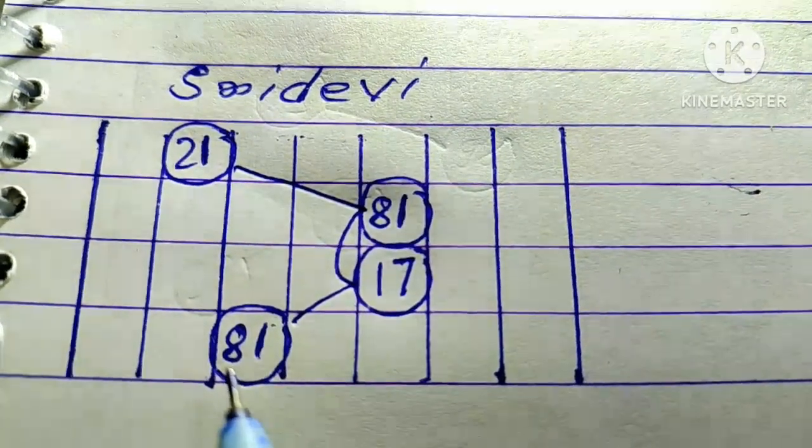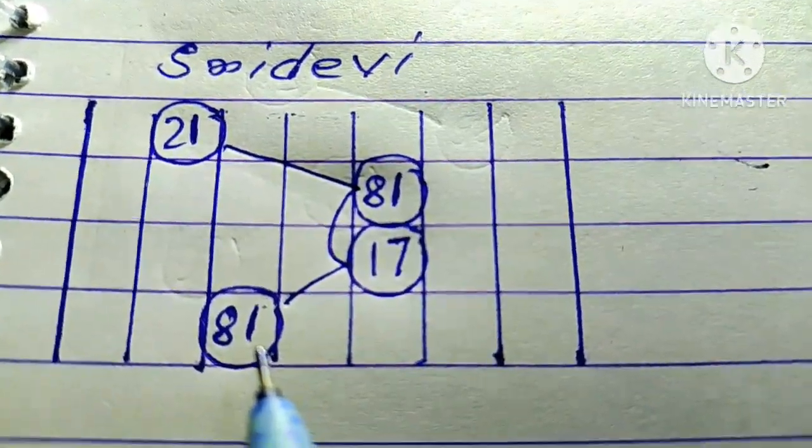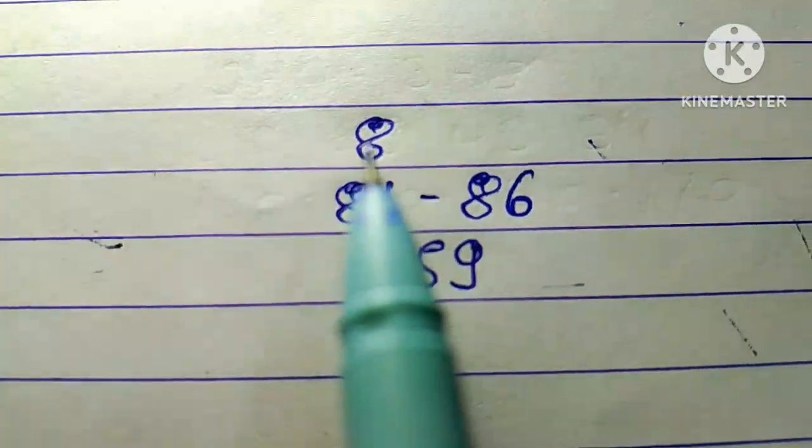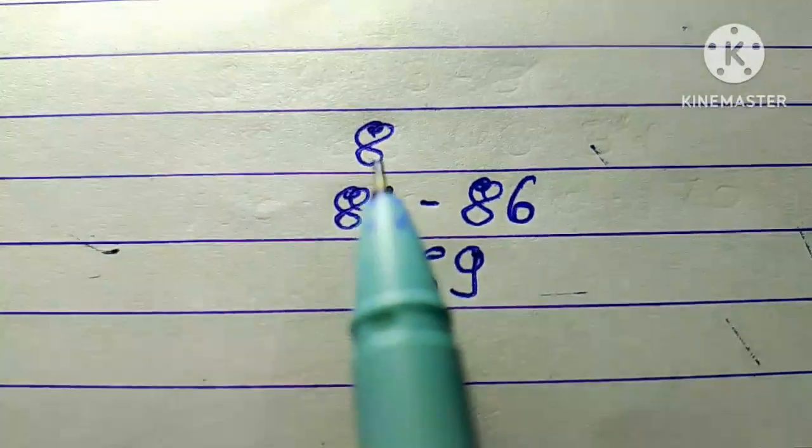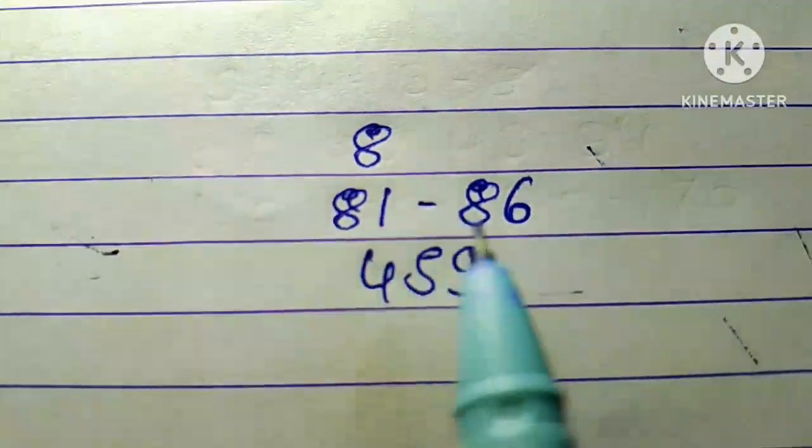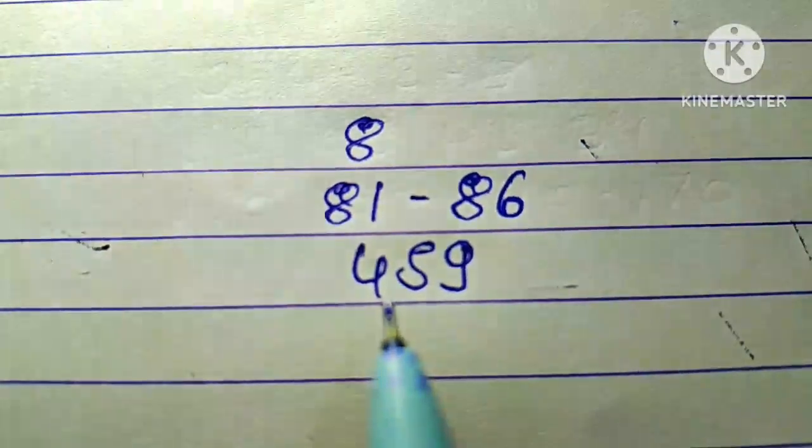single, jodi 81, OTC yank 8, strong jodi 81 86, strong penal 459.